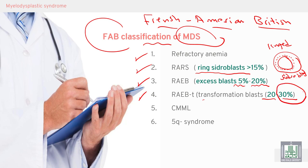If blasts are below 30%, it is refractory anemia with excess blasts in transformation. This is a pre-leukemic stage — you will go to the next stage after that, which is acute leukemia.